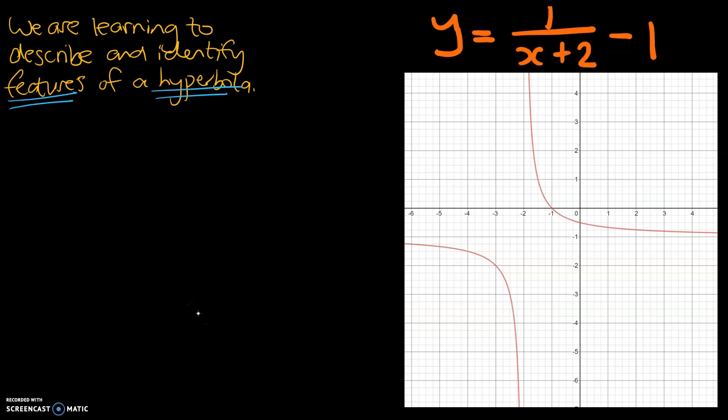Hey guys, Mr. Bowman here. Today's learning objective is in yellow and we are learning to describe and identify features of a hyperbole. So a hyperbole is a new type of graph we're looking at, and we've got an example on the right.